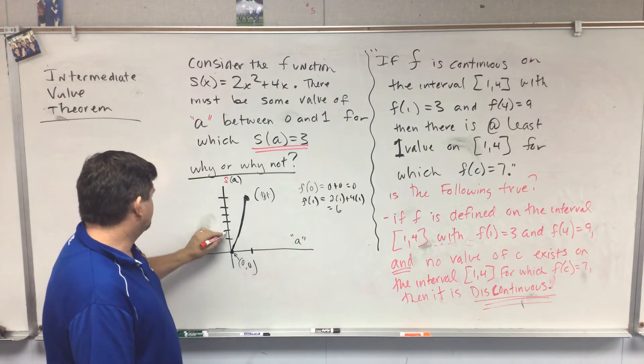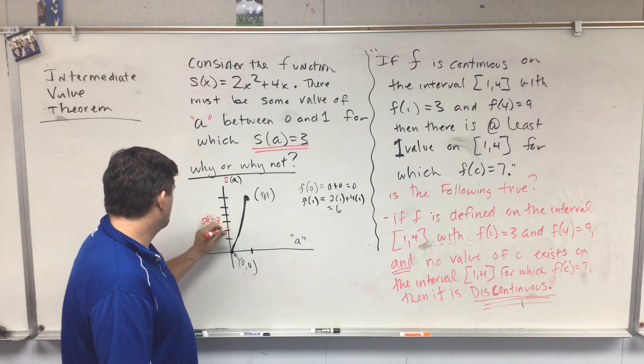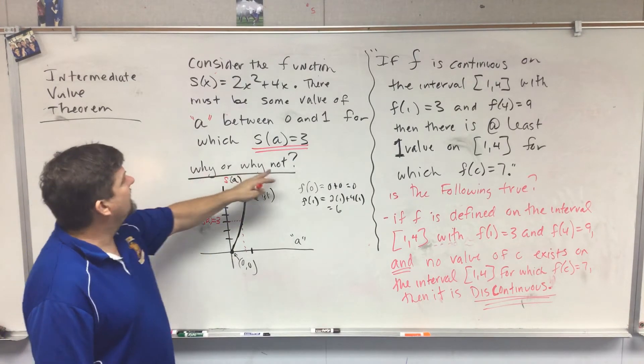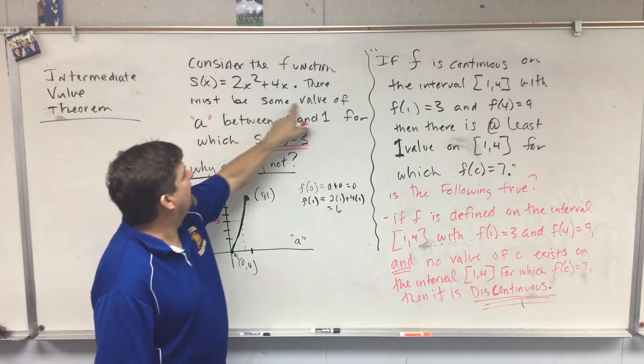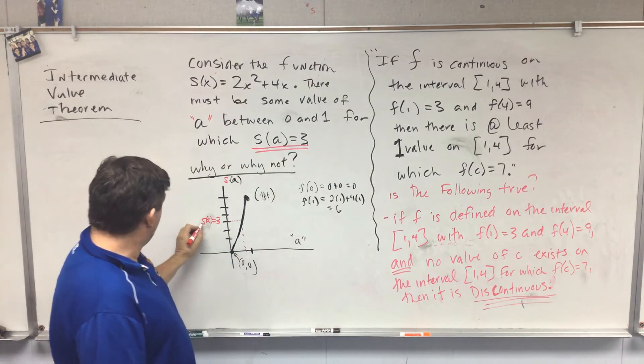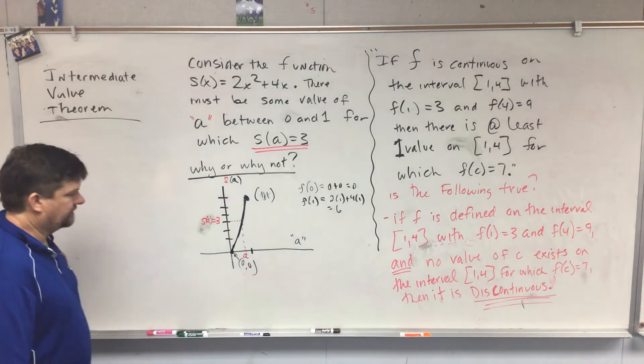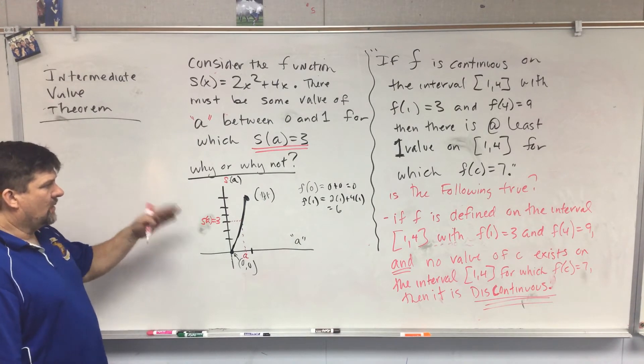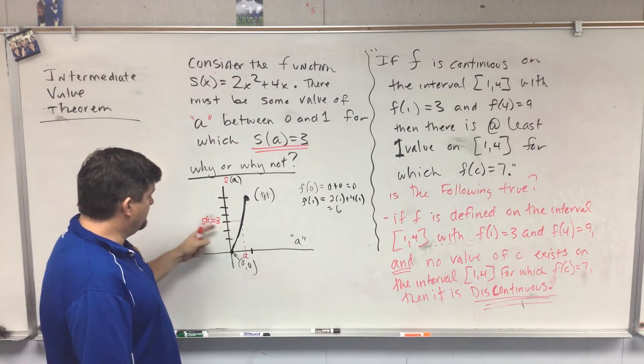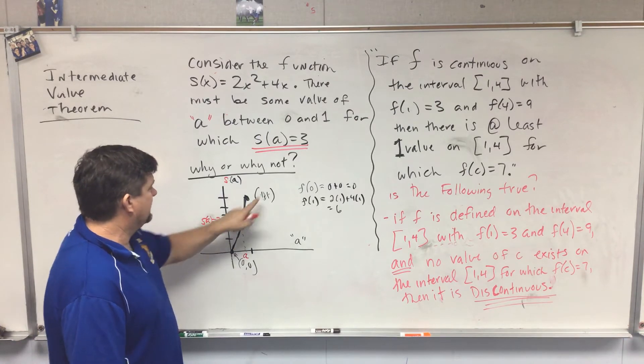So they want to know if I go up to 3, f(a) equals 3. I'm right here. I found my endpoints using the interval. What about that output s(a) equals 3? Well, this should be s(a). If I go up to s(a) equals 3 and I draw my line over here, it's asking why or why not will there be some value of a between 0 and 1.